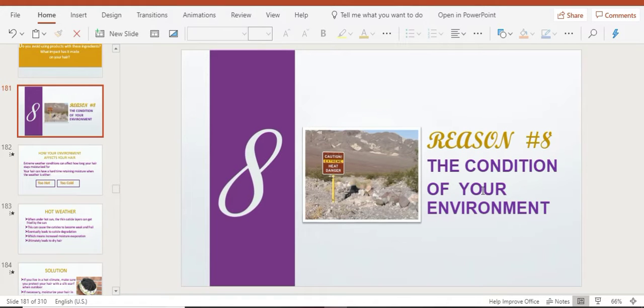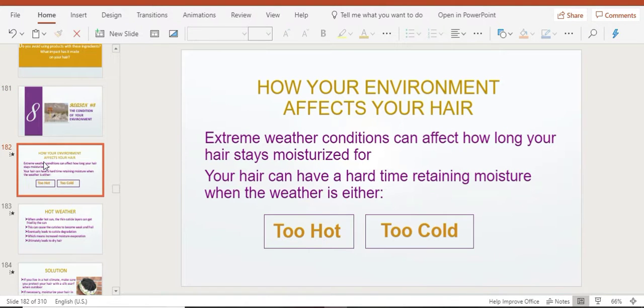Alright, let's take a look at the next reason - reason number eight why your hair is constantly dry. That is the condition of your environment. So you can blame it on the environment this time around, meaning it's actually not your fault. Let's look at how your environment affects your hair.